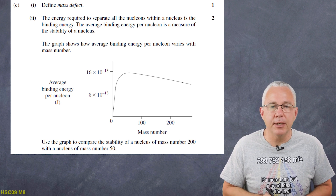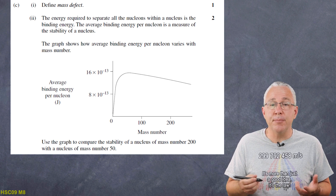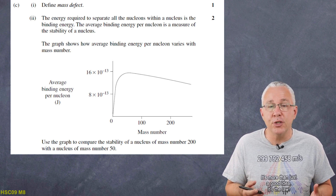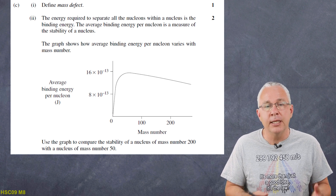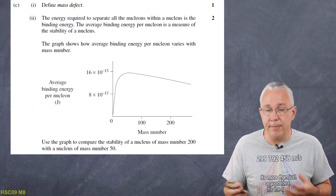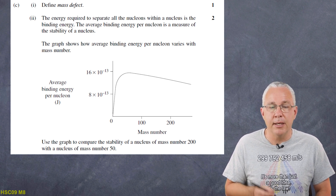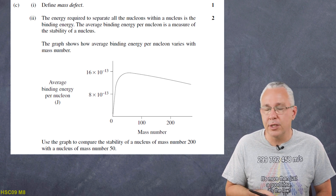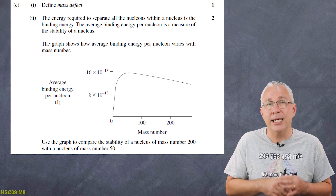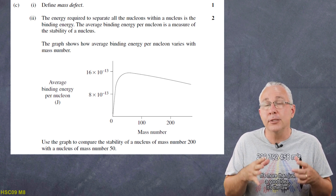Part C asks us to define mass defect. The energy required to separate all the nucleons from the nucleus is the binding energy. The average binding energy per nucleon is a measurement of the stability of the atom. The graph shows binding energy per nucleon versus mass number, and the question asks us to use the graph to compare the stability of a nucleus with mass number 200 with a nucleus of mass number 50.